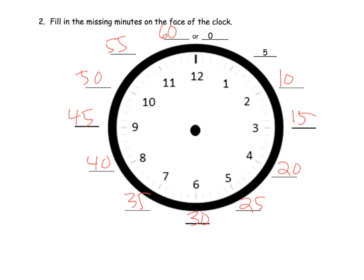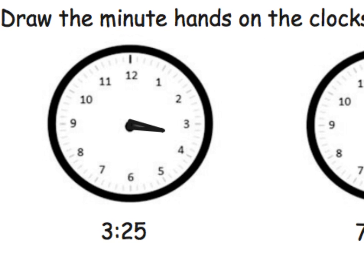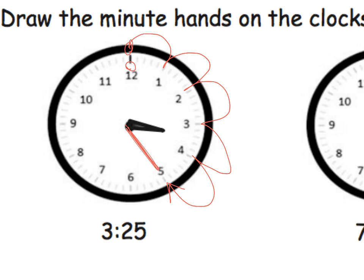Now we've removed a little bit of scaffolding — they want us to draw the minute hands on the clock. If it says 3:25, I know I'm going to start at 12 and count: starting at 12, that's where the zero is, and we go 5, 10, 15, 20, 25 — so we know the minute hand has to be pointing straight to that 5, and that's where the minute hand is going to go.